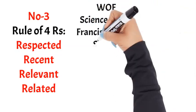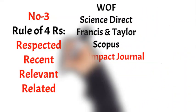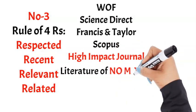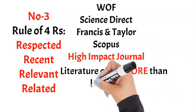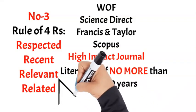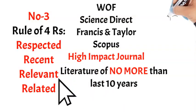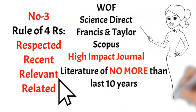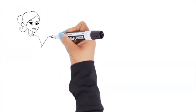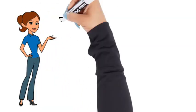Rule number three: four R's — Respected, Recent, Relevant, and Related literature. Take from Web of Science, ScienceDirect, Francis and Taylor, and Scopus. The point is it should be a high-impact journal. The literature you are reading should not be too old — at least within 10 years. One may think: what if the theory is quite old? Yes, it comes under the point of its relevancy. You can use a very old theory if it's relevant.